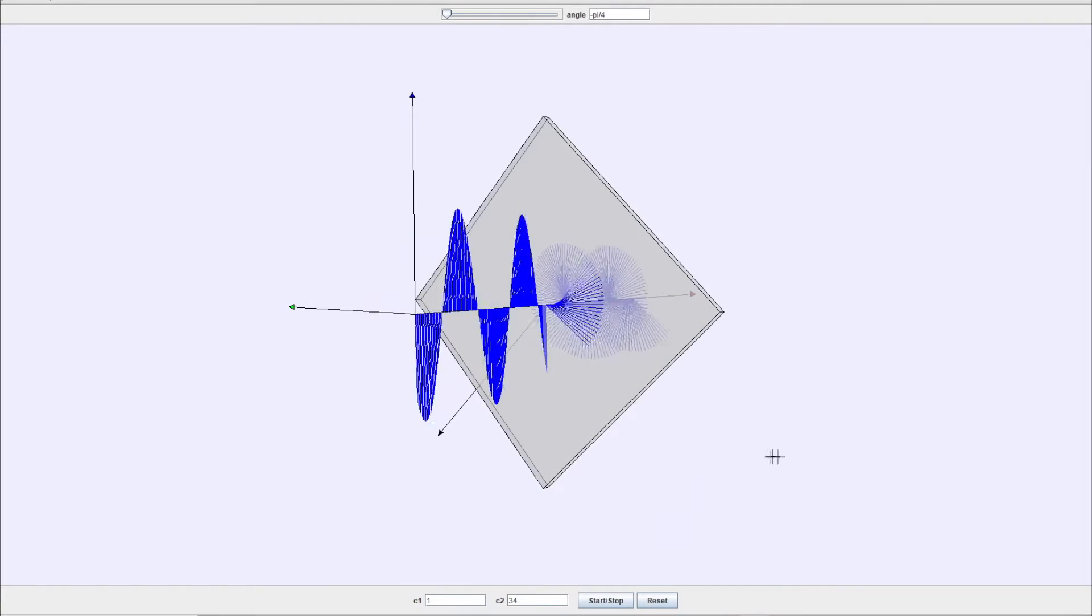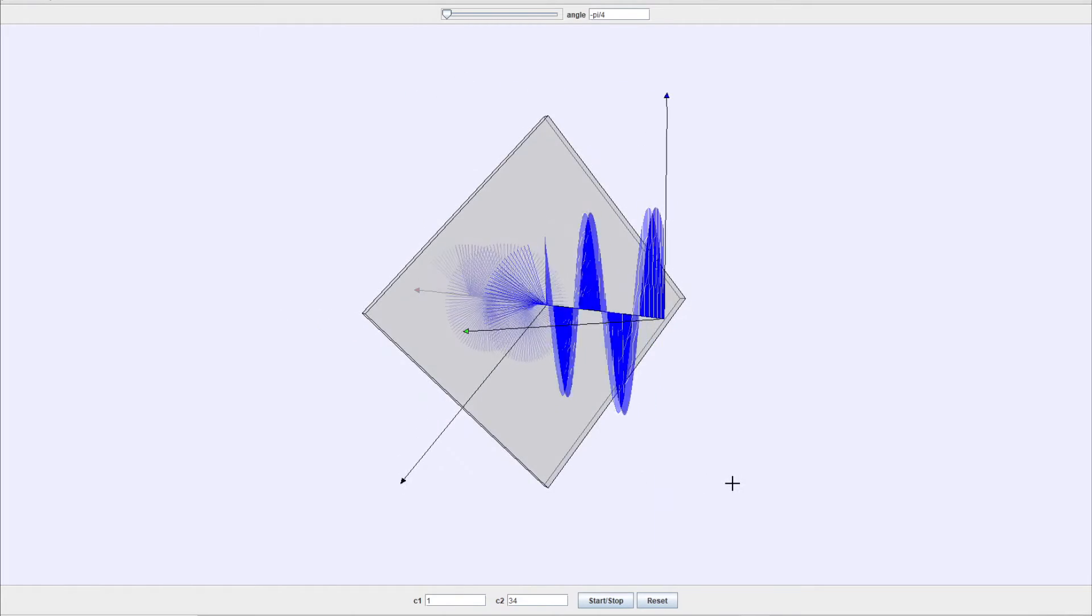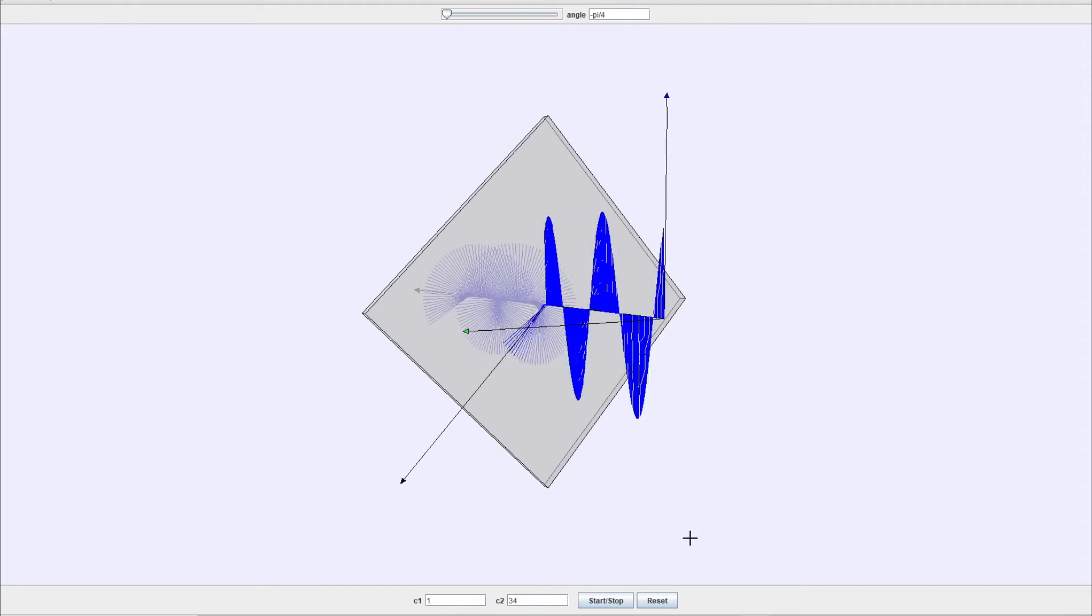If we change the phase shift that the quarter wave plate introduces to a negative phase shift, notice that the rotation direction now changes.